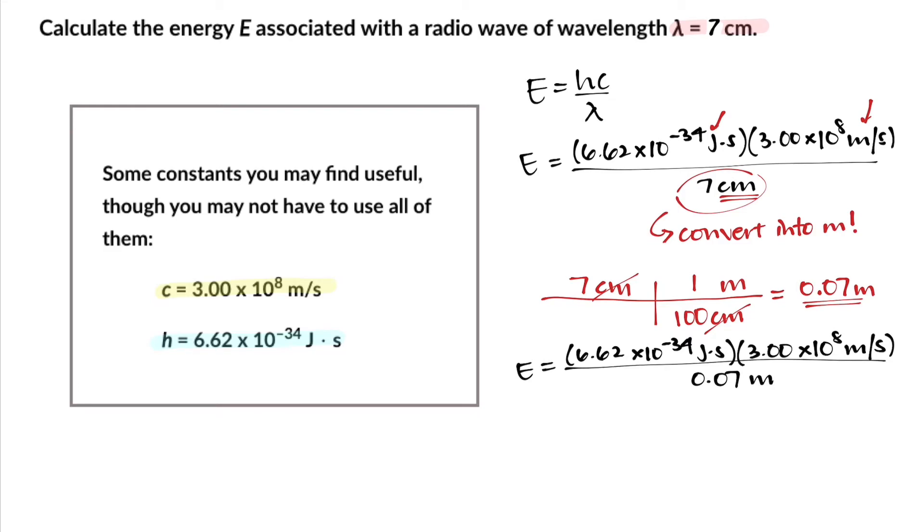That way we can cancel out a lot of the units that we're dealing with. These meters cancel with those meters. The seconds here cancel with the seconds there because you have one on top and one on bottom. So we're just left with the units of joules, which is exactly what we want to keep.